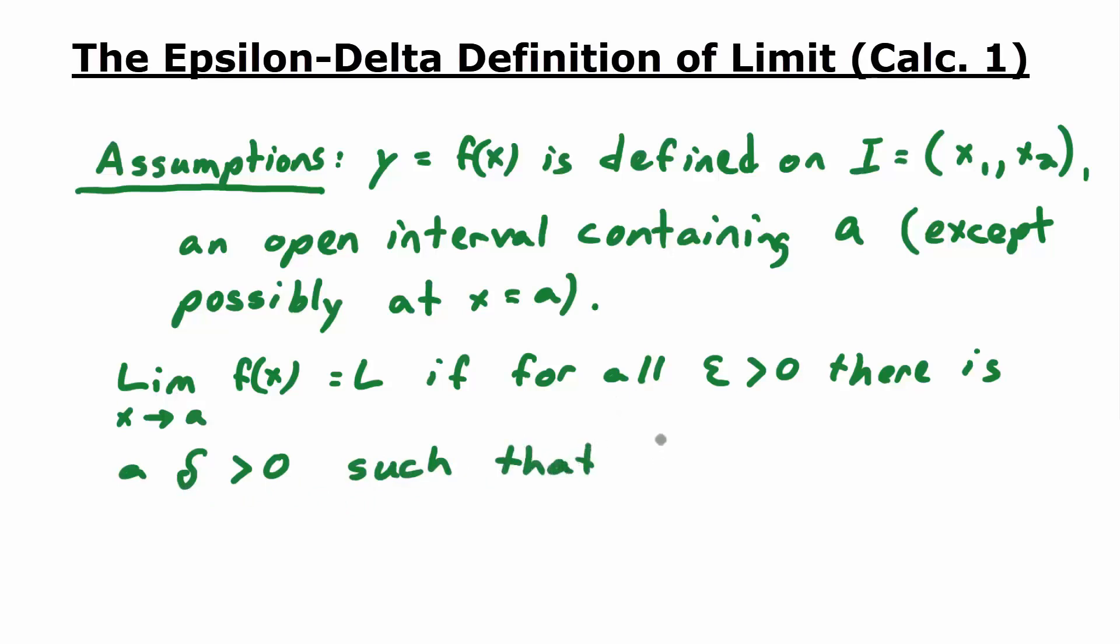the distance between f of x and L, we could write that as the absolute value of f x minus L, is less than epsilon, whenever the distance x minus A is going to be bigger than zero. It's in between zero and delta.